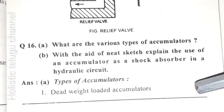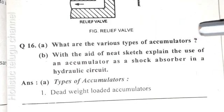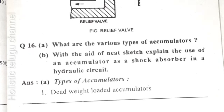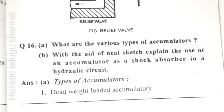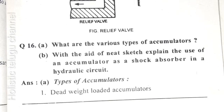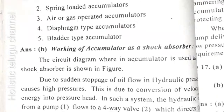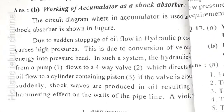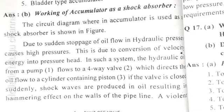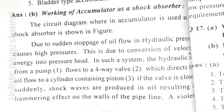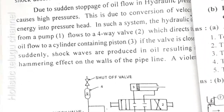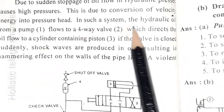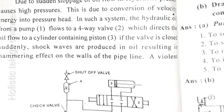Next question: what are the various types of accumulators? With a neat sketch, explain an accumulator as a shock absorber in a hydraulic circuit. Types of accumulator: weight loaded accumulator, spring loaded accumulator, air or gas operated accumulator, diaphragm type accumulator, and bladder type accumulator. Working of an accumulator as a shock absorber: a circuit diagram wherein accumulator is used as a shock absorber as shown in figure. Due to sudden stopping of oil flow in a hydraulic press, it causes high pressures.